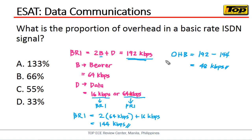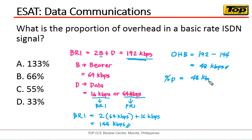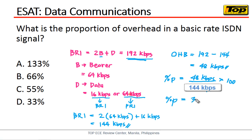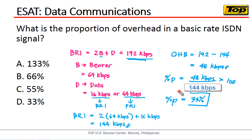What is being asked is the proportion — not just 48 kbps, because as you can see, this should be a percentage: the proportion of the overhead relative to the data rate. So how do we compute that proportion? That is equal to 48 kbps over 192 kbps, multiplied by 100. And the proportion is equal to 33%. So the answer is very obvious — that is letter D, 33%.